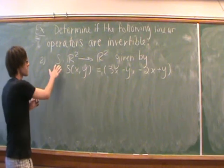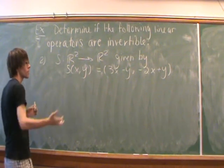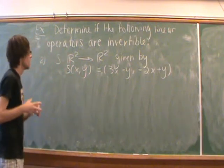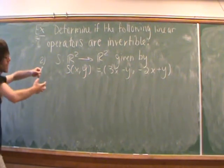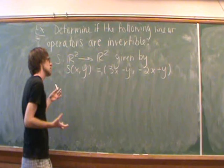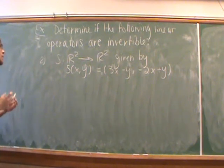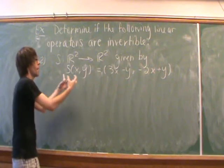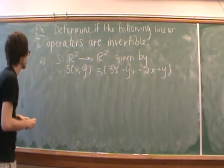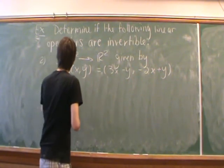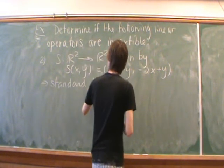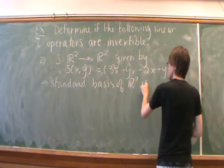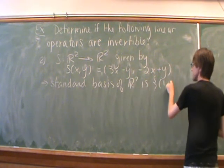And next we're going to take a look at a linear transformation from R² to R² given by the following form. What we're going to do for this one is we can't really visualize what this looks like easily. So what I'm going to do is I'm going to take the standard basis of R² and I'm going to map it through S and see where it goes. So remember that the standard basis is this collection here.